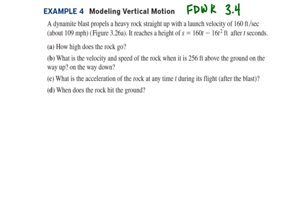In this video I want to talk about example 4 from the FDWK book section 3.4. Here we have an example of a dynamite blast propelling a heavy rock straight up with a launch velocity of 160 feet per second, which is about 109 miles per hour, and reaching a height of s equals 160t minus 16t squared feet after t seconds. Over to the left in the bottom corner we have a diagram of what this looks like.